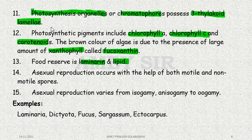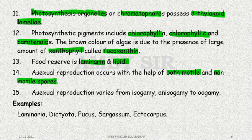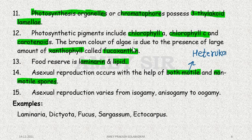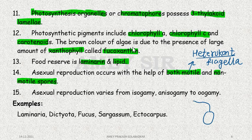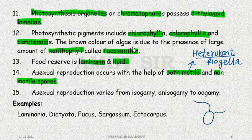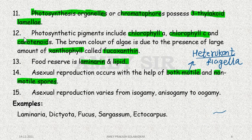Sexual reproduction occurs through both types of spores — motile and non-motile. The locomotory organ produced here exhibits heterokont flagellation: one flagellum is long at the top and the other is short on the lateral side. Two unequal flagella are present, hence this is called heterokont flagellation.